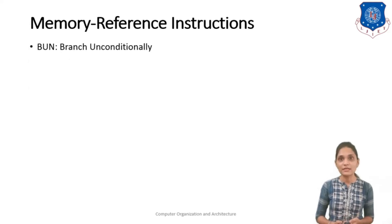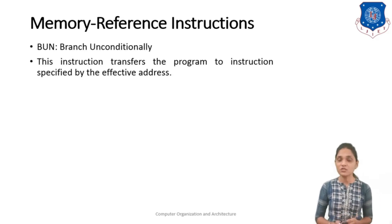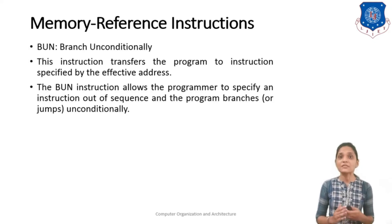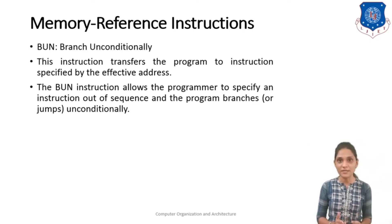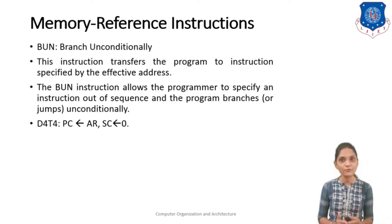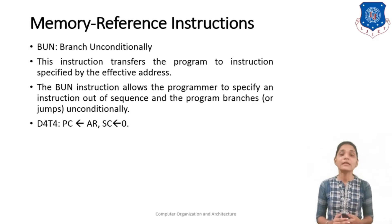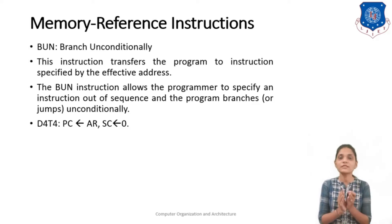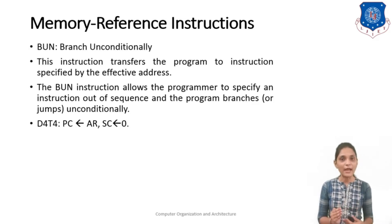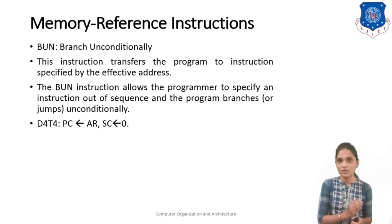Next we have the BUN instruction — Branch Unconditionally. This instruction transfers the program to the instruction specified by the effective address. The BUN instruction allows the programmer to specify an instruction out of sequence, essentially a jump instruction executed unconditionally. At T4, you check for the D4 control signal; if the condition D4·T4 is fulfilled, the content of the Address Register (the effective address) is stored into the Program Counter, changing the sequence of execution. For example, BUN 500 means your next Program Counter value will be 500.